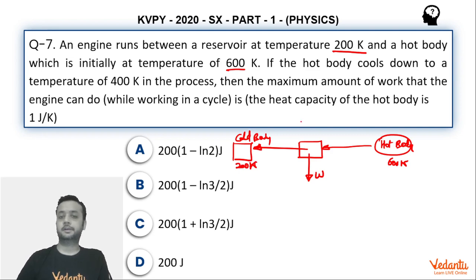Now this temperature 200 is constant but this temperature of the hot body is slowly decreasing because as the hot body gives the heat to the engine its temperature goes down. In the question we have been asked to find the maximum work that can be done by the engine while the temperature of the hot body moves from 600 to 400 Kelvin. So in this duration we have to find the maximum work that can be done by the engine.